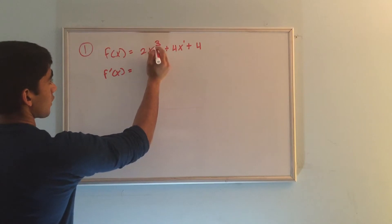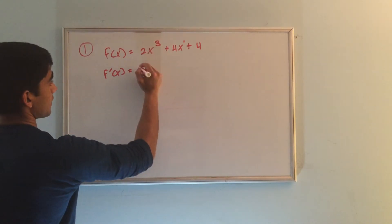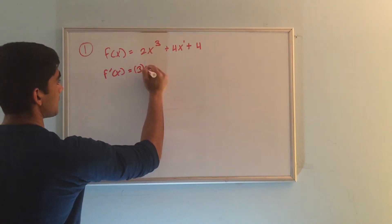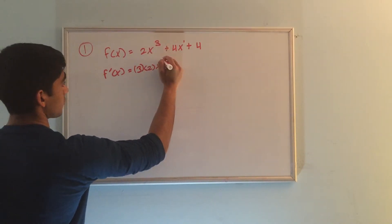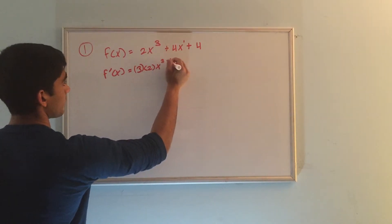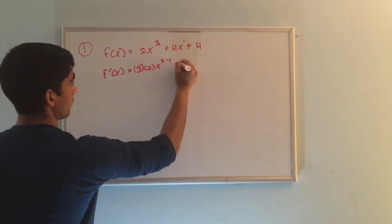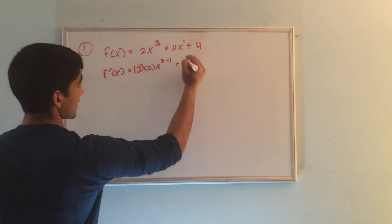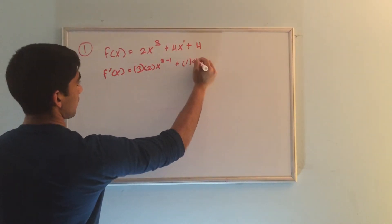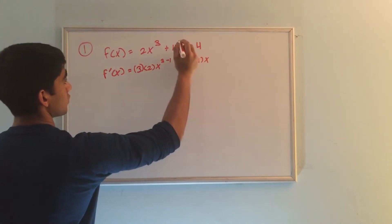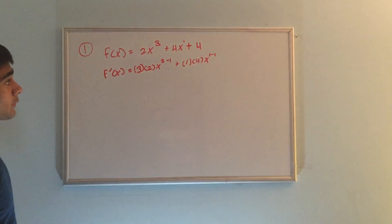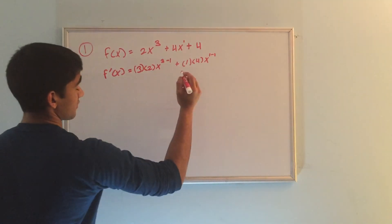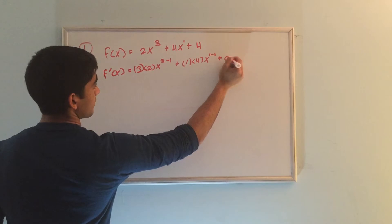According to the power rule, we bring the exponent down. So we keep the 2 and raise x to the constant minus 1. Let's do that again for the next term — bring down the exponent, which is 1, multiply it by the constant in front, and raise it to the exponent minus 1. And any time you take the derivative of a constant, that equals 0. In this case, 4 is a constant, so you add 0.